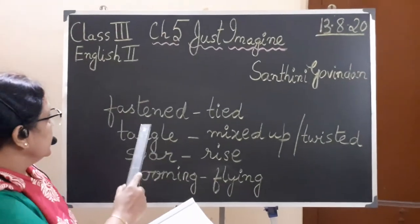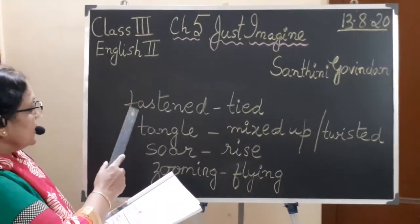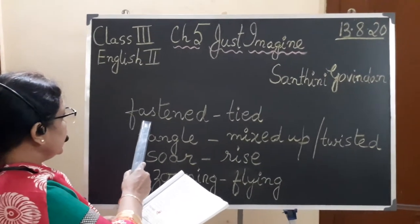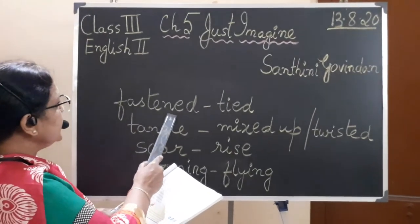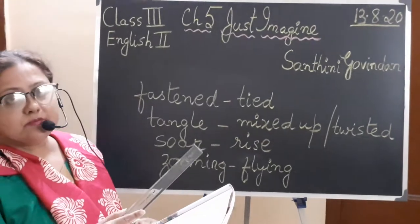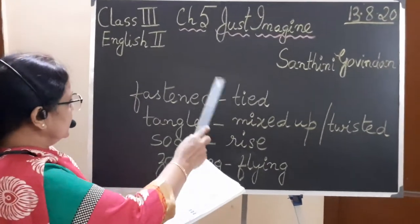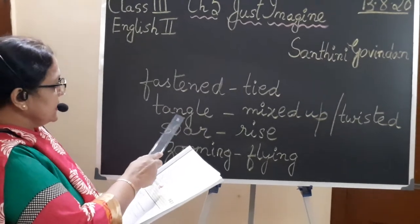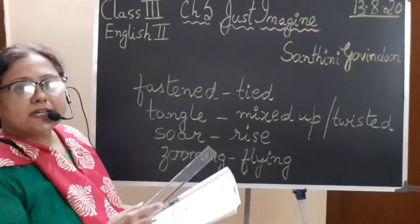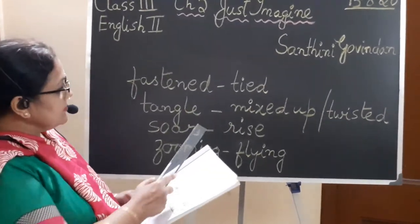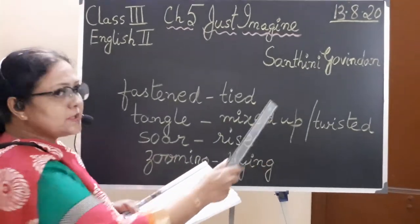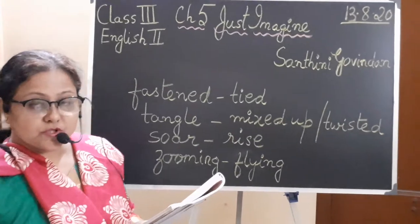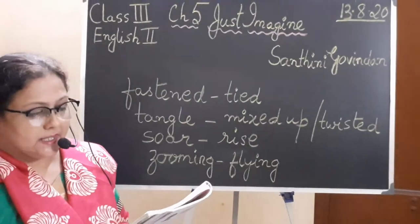Look at this word: F-A-S-T-E-N-E-D. Fastened means tied. Next: T-A-N-G-L-E. Tangle means mixed up or twisted. Mark these words in your book children. Learn their meanings and the spellings.